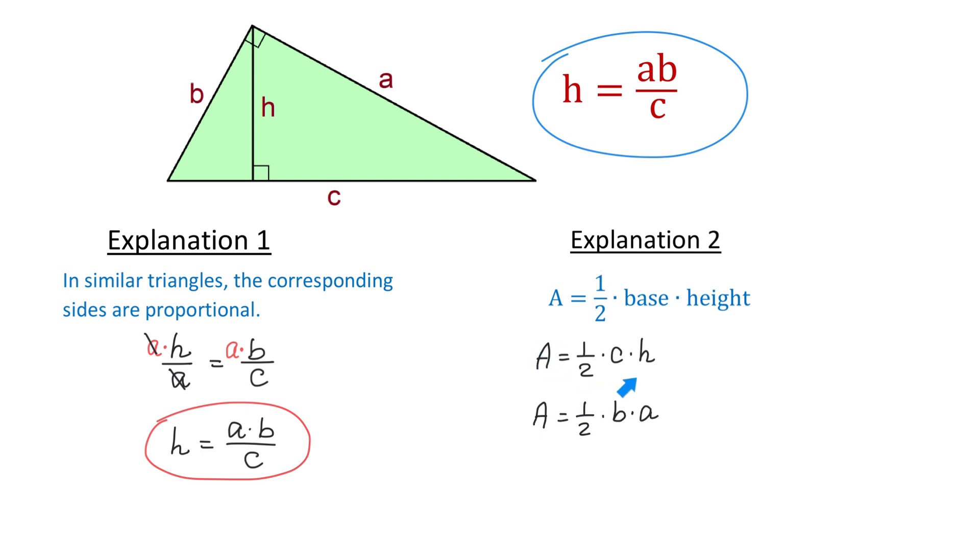Now, both these formulas represent the area of the original triangle. Then we can write that 1 half CH equals 1 half BA. And now, to solve this equation for H, first we will multiply both sides by 2. Then after we cancel 2, we will have that CH equals BA.